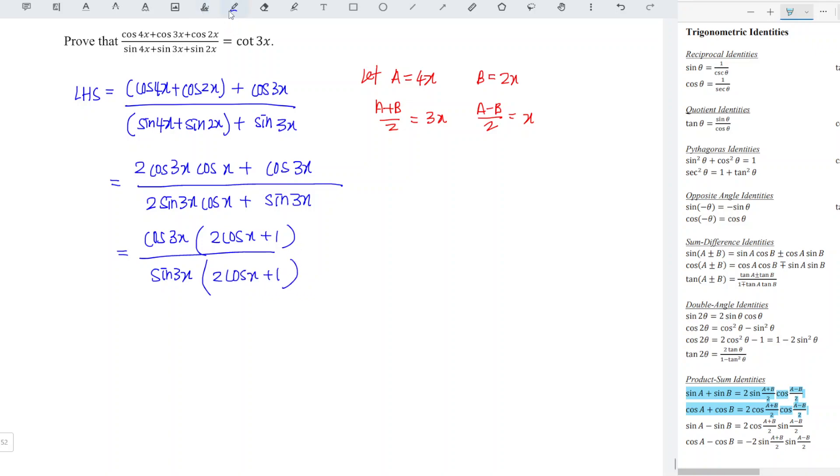Let's simplify the fraction. So as we can see the common term here is 2 cos x plus 1. So which means that we left cos 3x over sine 3x. Cosine over sine is cotangent. So which means that this is exactly equal to the right hand side. And hence we proved.